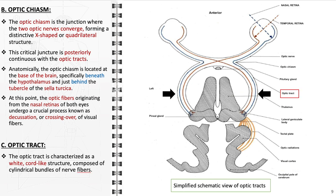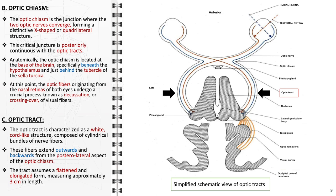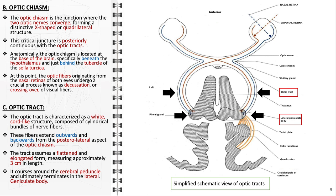The optic tract plays a crucial role in the human visual pathway. Following the optic chiasm, where a partial crossing of nerve fibers occurs, the optic nerves bifurcate into two optic tracts. Each tract is a distinct, white, cord-like structure consisting of cylindrical bundles of nerve fibers, stretching outwards and backwards from the posterolateral aspect of the optic chiasm. Anatomically, the optic tract is characterized by its unique, flattened, and elongated shape, with an approximate length of 3 cm. As it progresses, the optic tract wraps around the cerebral peduncle and eventually terminates at the lateral geniculate body in the thalamus. Damage or lesions along the optic tract can lead to homonymous hemianopia, where there is a loss of the same field of vision in both eyes.